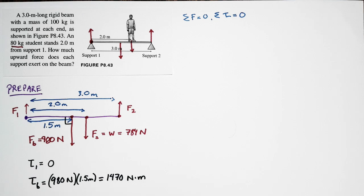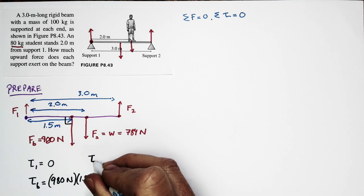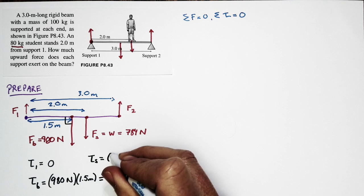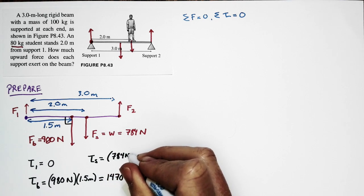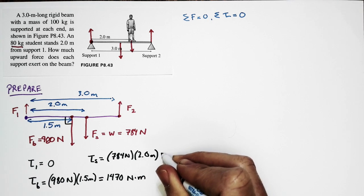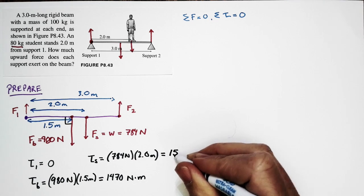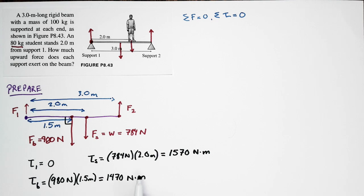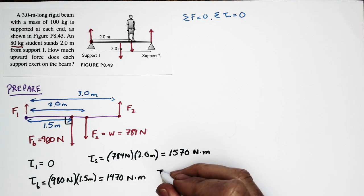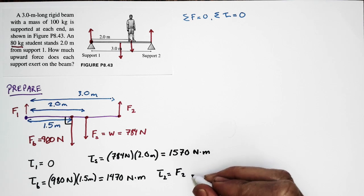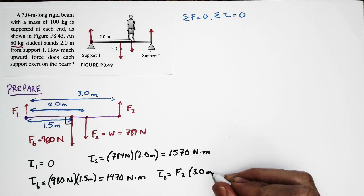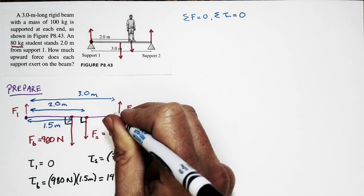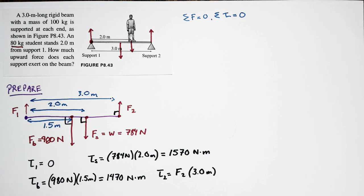The torque due to the student's weight Ts equals 784 Newtons × 2.0 meters = 1,570 Newton-meters. The torque due to support 2 is F2 × 3.0 meters, where F2 is unknown. All forces act perpendicular to the beam, so we don't need any sine-of-angle factors. Now we're set to solve.